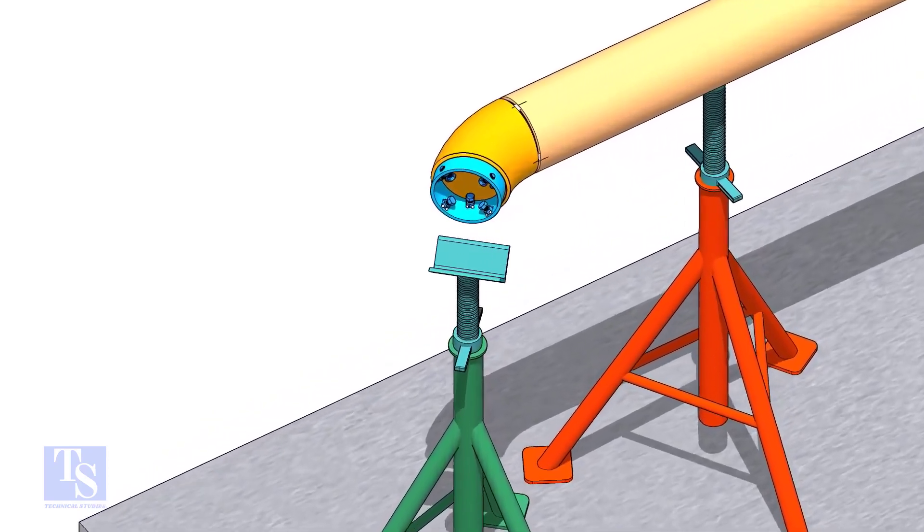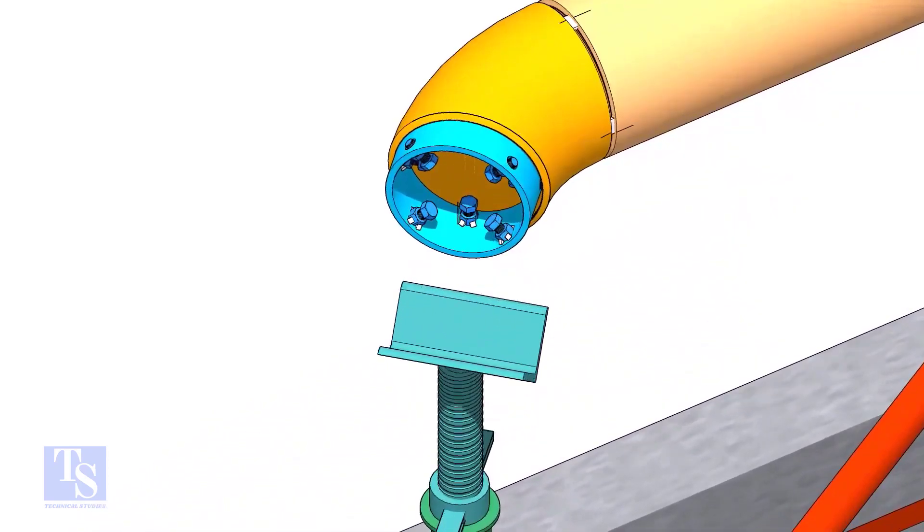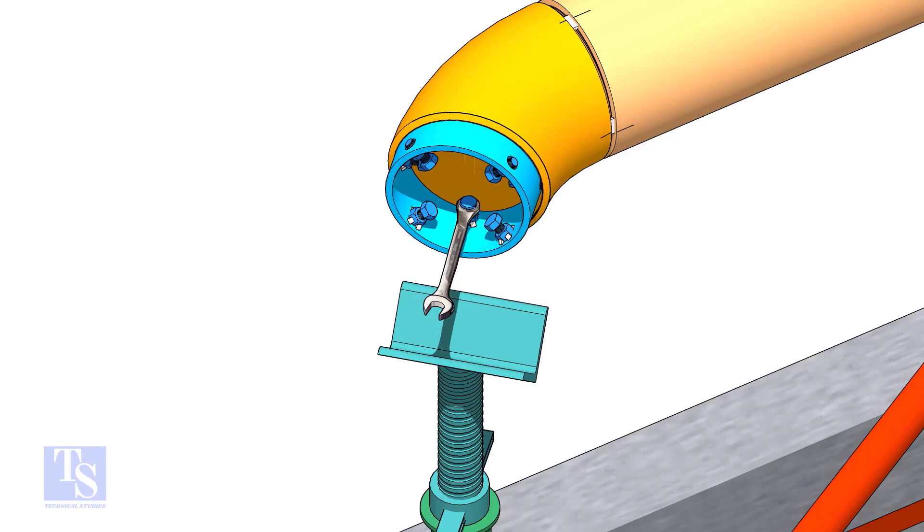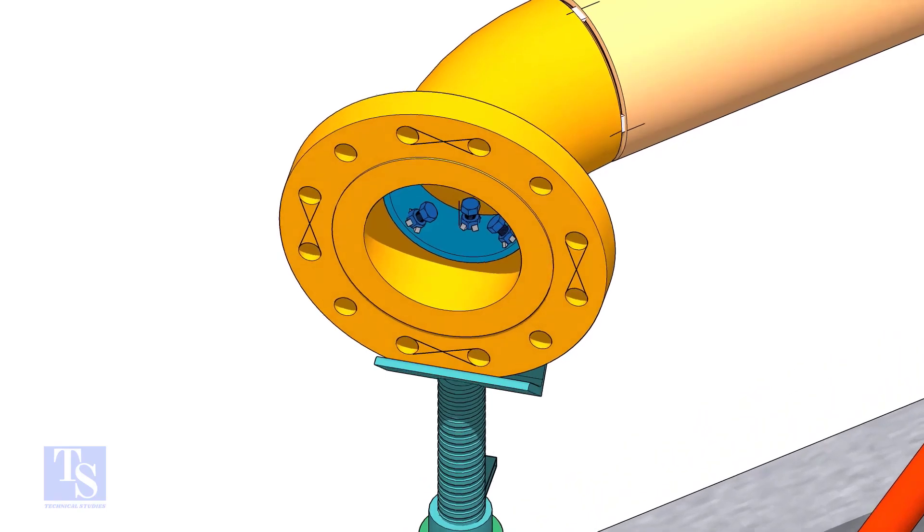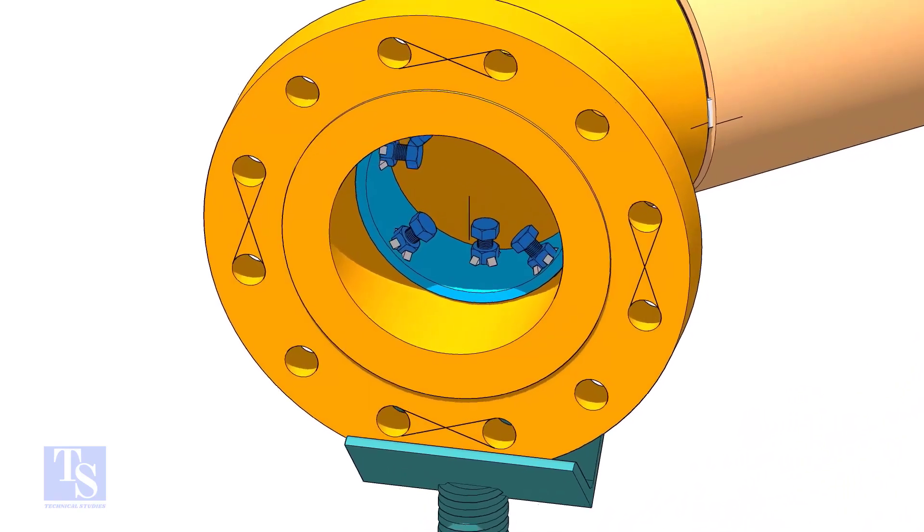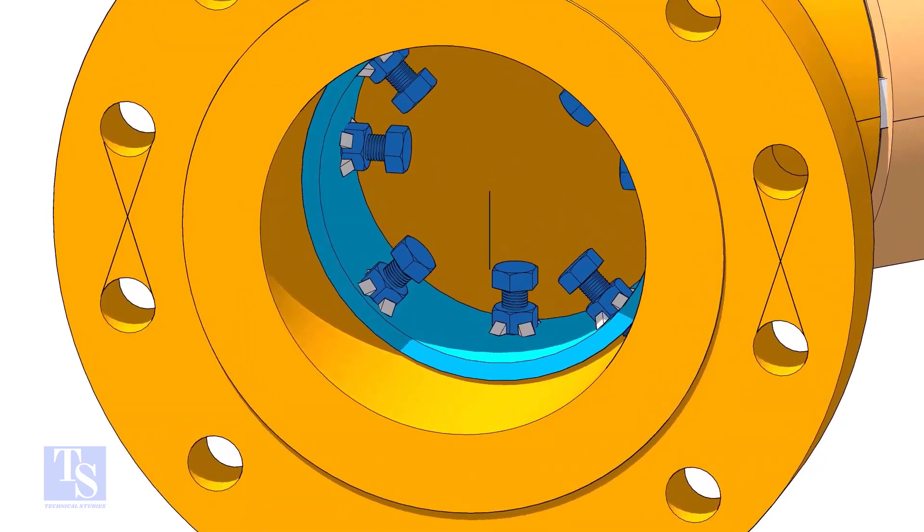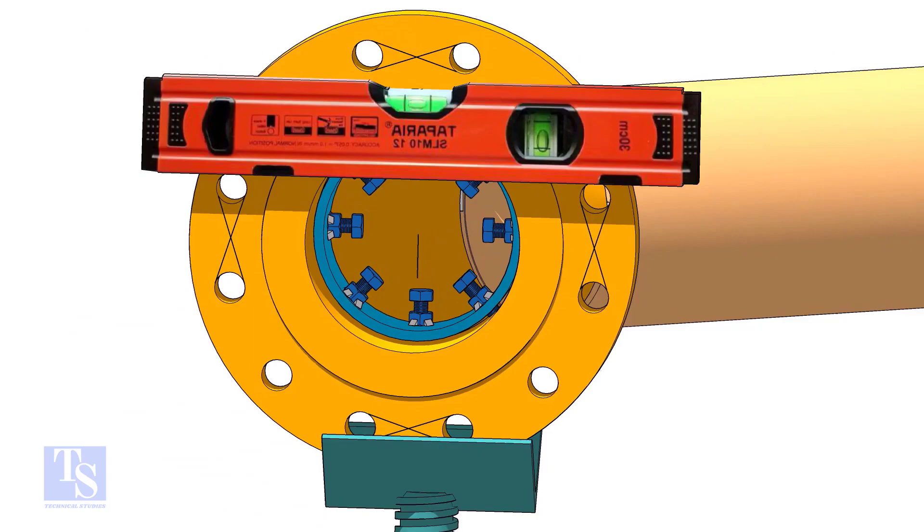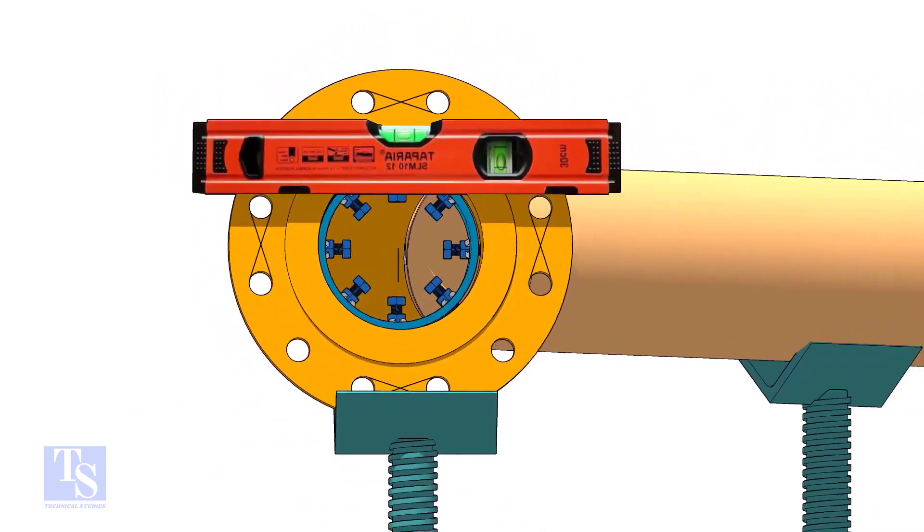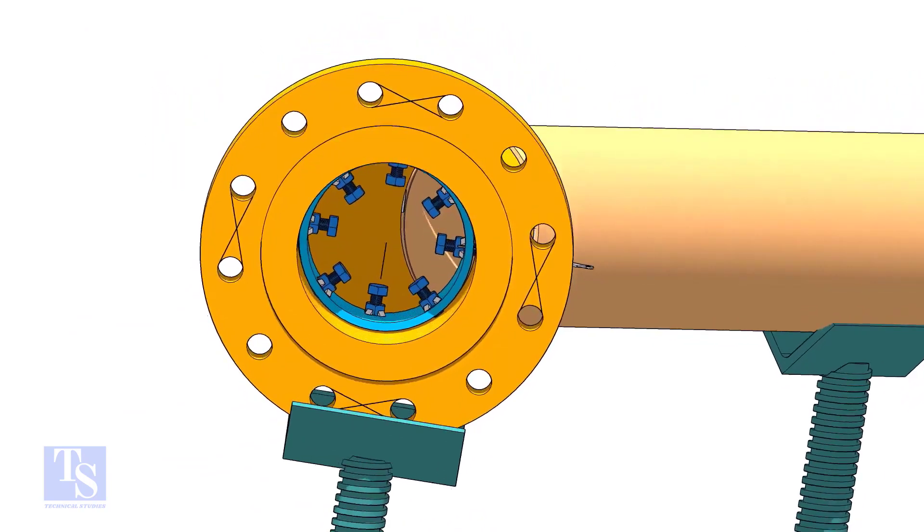Put the clamp in the elbow and tighten lightly. Put the flange in its position and maintain the level. Tighten the clamp bolts lightly. Check the gap and the overlap.